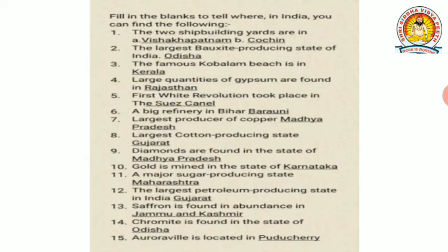The largest petroleum producing state in India is Gujarat. Saffron is found in abundance in Jammu and Kashmir. Chromite is found in the state of Odisha, and AVIL is located in Puducherry.